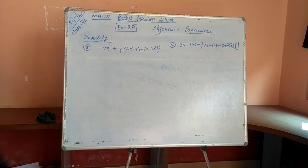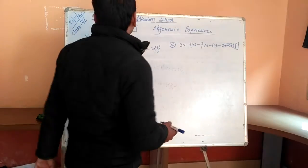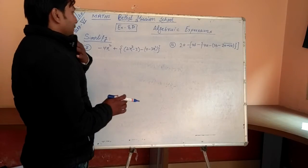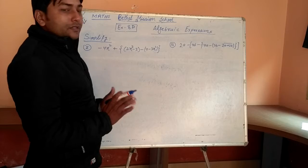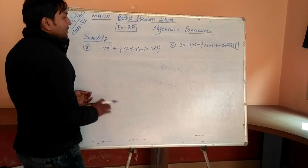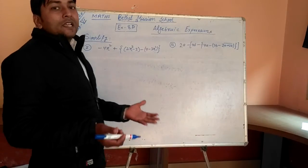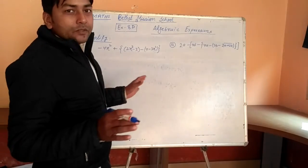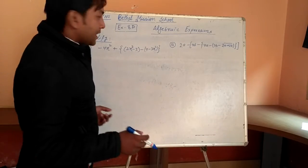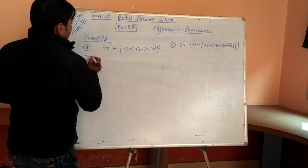Now I have taken two more examples from exercise 8C. Here, you have to simplify — same question given. You have to simplify, it means you have to remove the brackets and like terms you have to add or subtract as required.